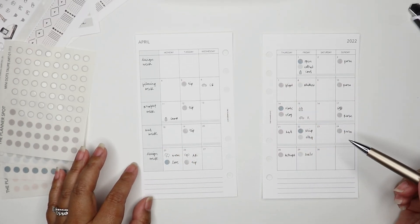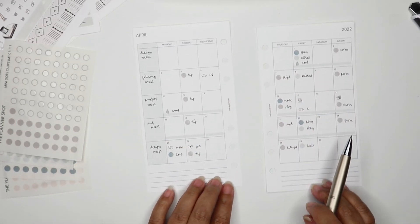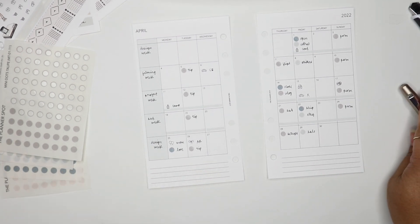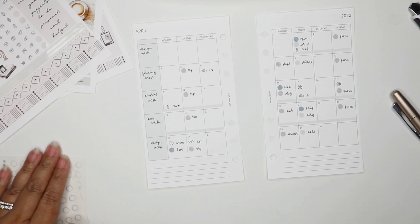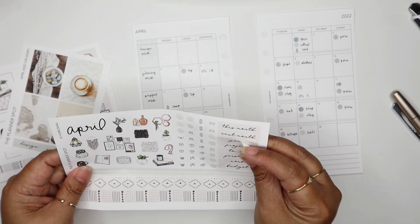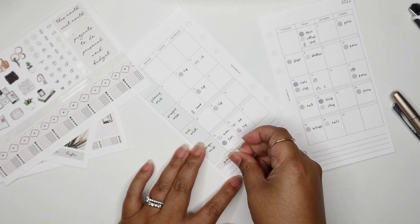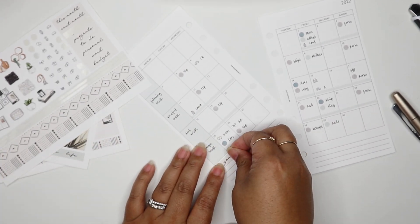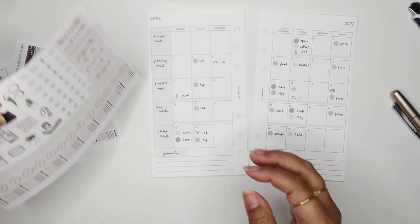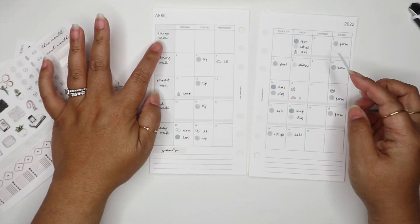I filled everything in on the main section and all I have left are these bottom two areas. On my kit I have these headers, so I use goals on the left side. I want to mention here too because I've got some questions about this.